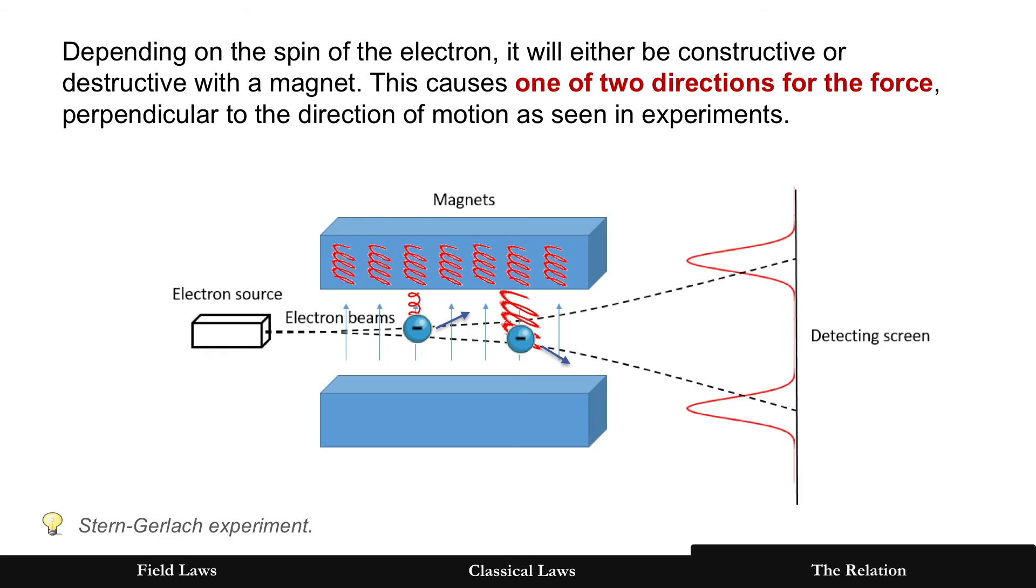Depending on the spin of the electron, it can either be constructive or destructive, and that causes one of two directions for the force. But again, it's perpendicular to the direction of motion, just like centripetal force, and that causes the electron to be attracted or propelled as seen in experiments.